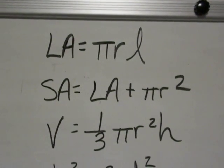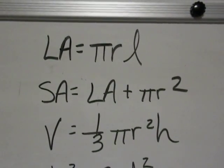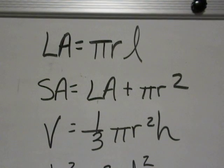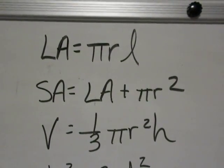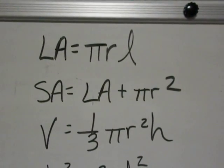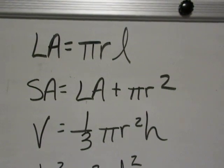Key formulas that we need to know for the cone are that lateral area is equal to pi RL. Surface area is the lateral area plus one area of the base. Because the base is a circle, that's pi R squared.